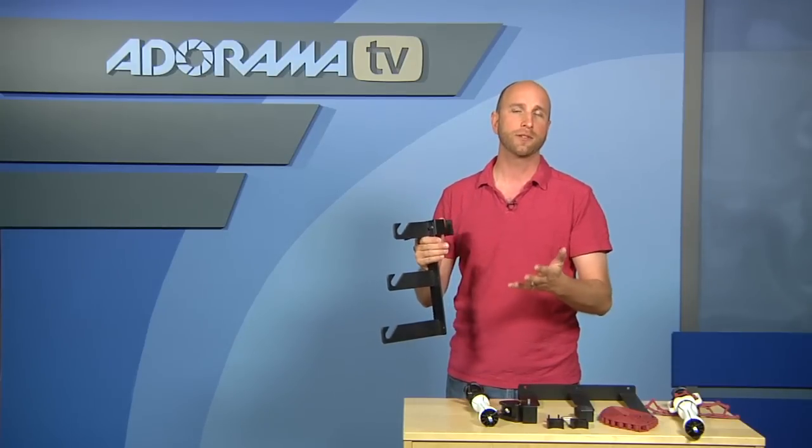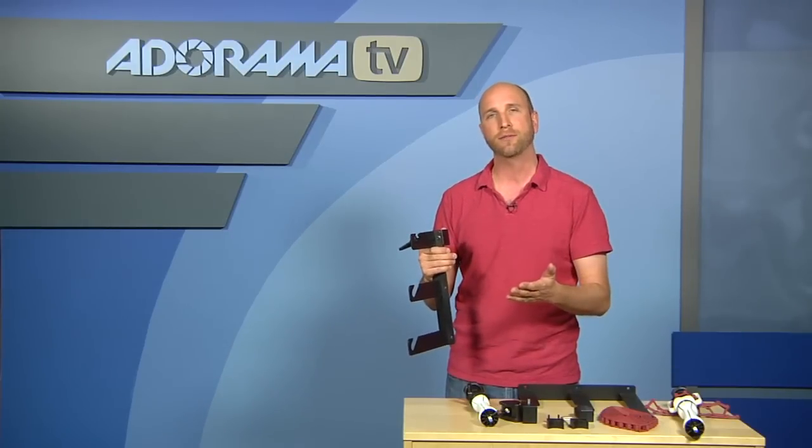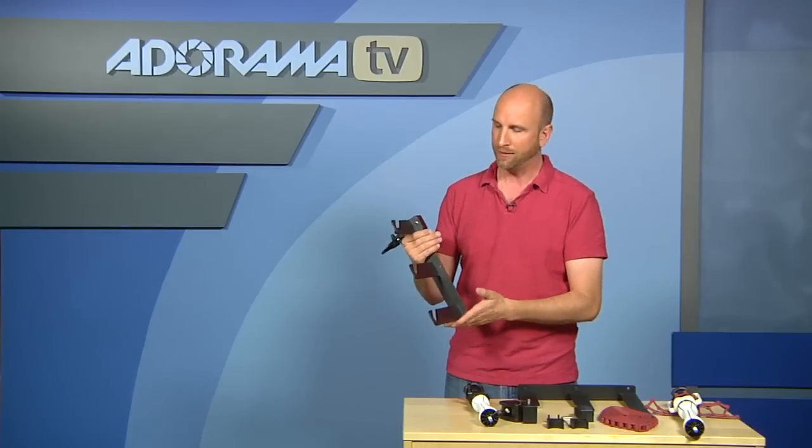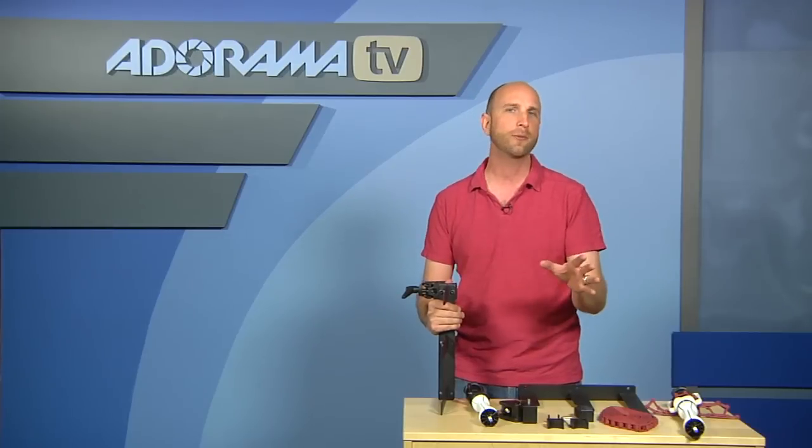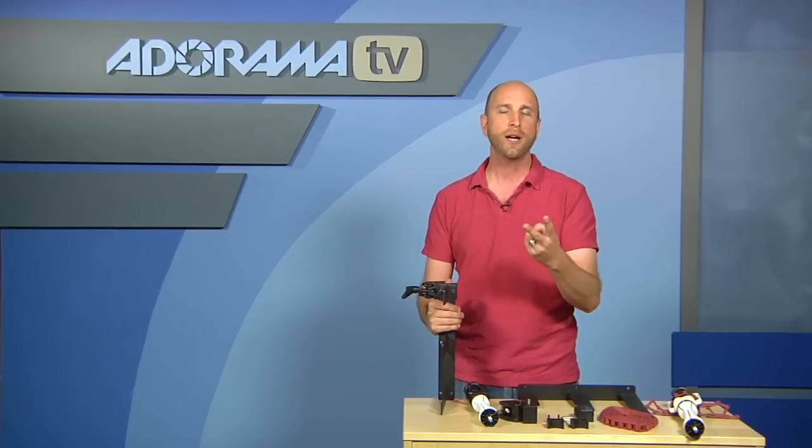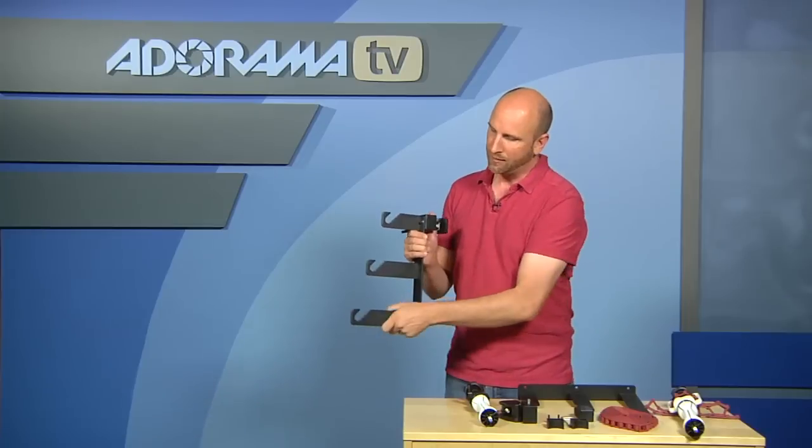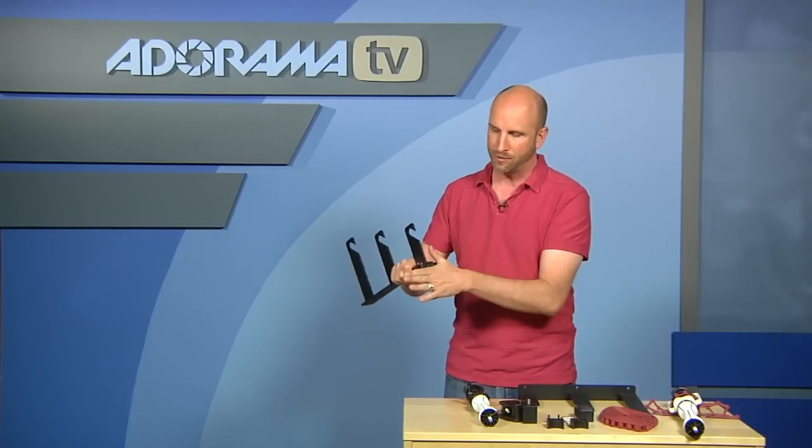That's really helpful if you're in a studio with lots of different backgrounds that have to change quickly. Now this system here is a crazy value. It's $380 for everything we're going to show you today. That includes two auto poles, these two brackets, and the super clamps.